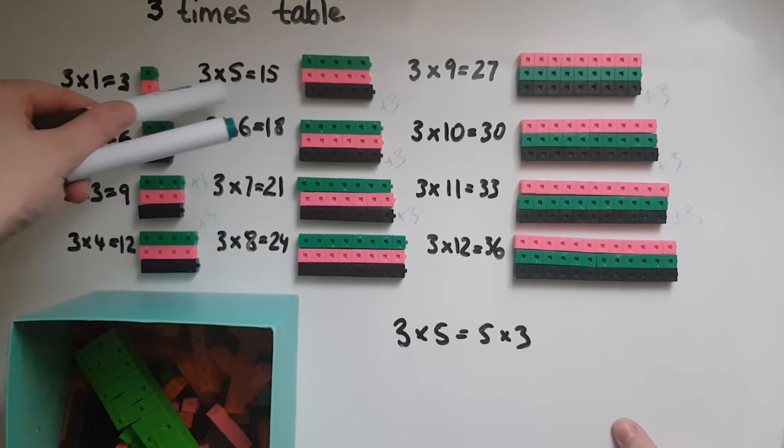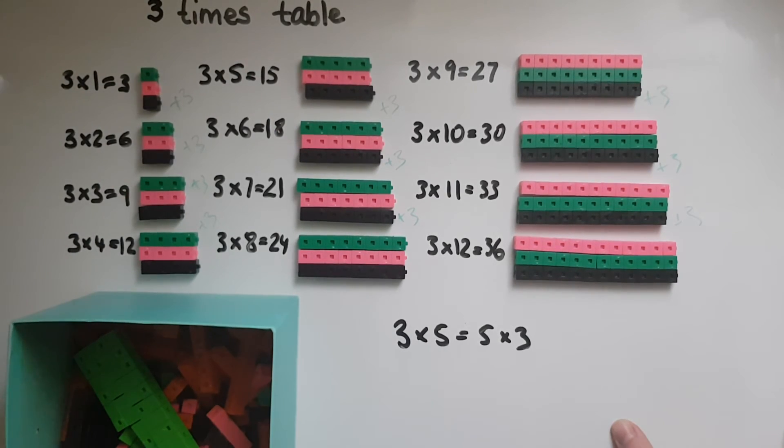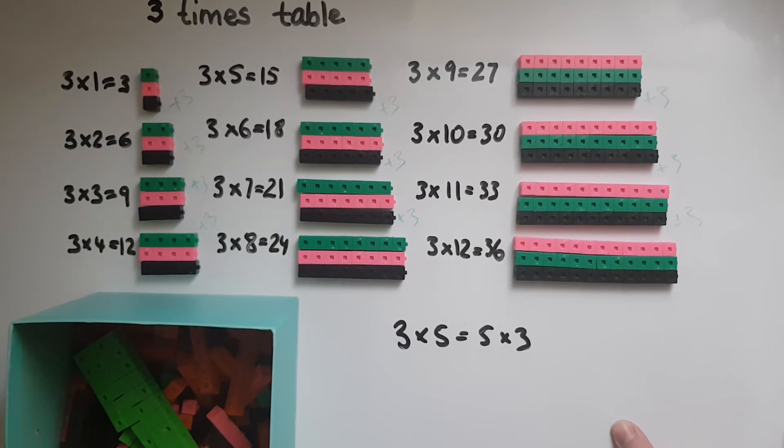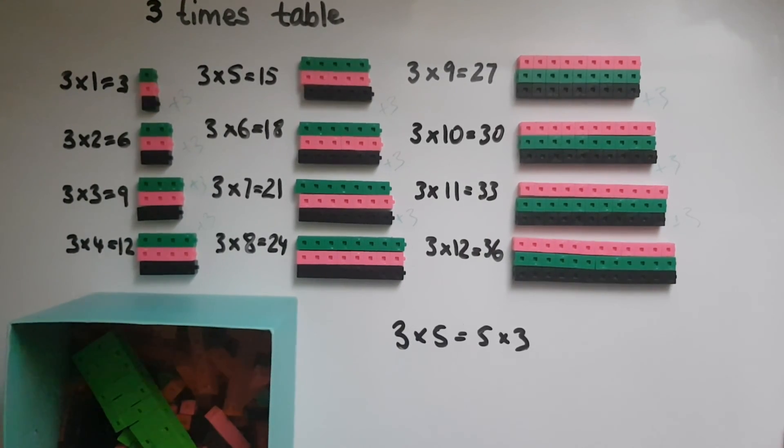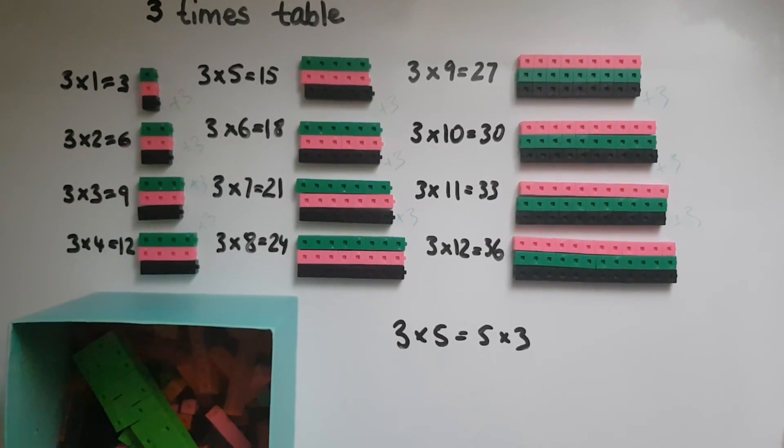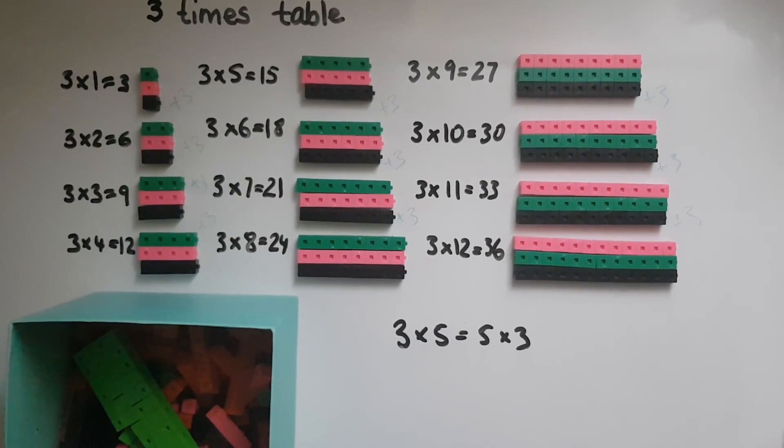So if you know that 3 times 5 is 15, to get 3 times 6, just add another 3, and that gives us 18. What I suggest you do is write these facts on a piece of paper or post-it and read them out loud again and again till you've remembered them in order.